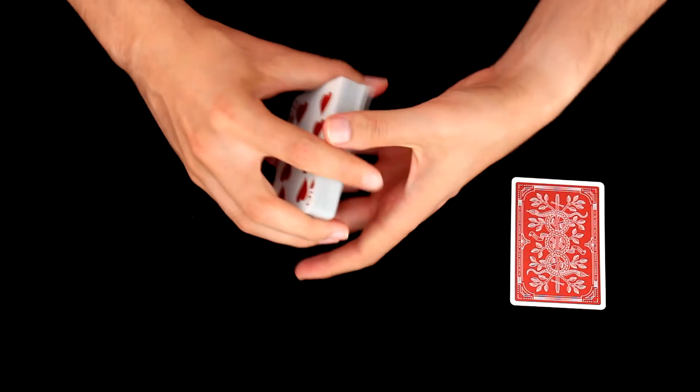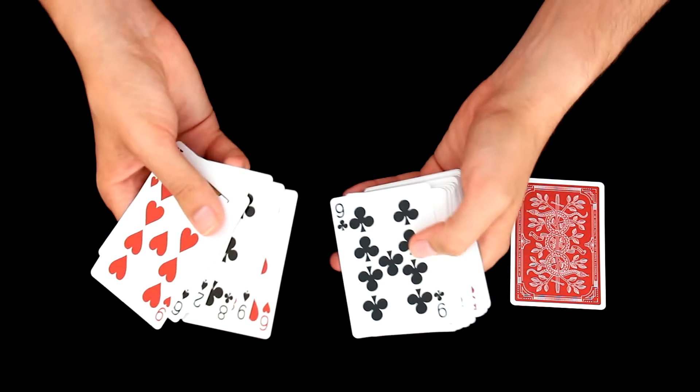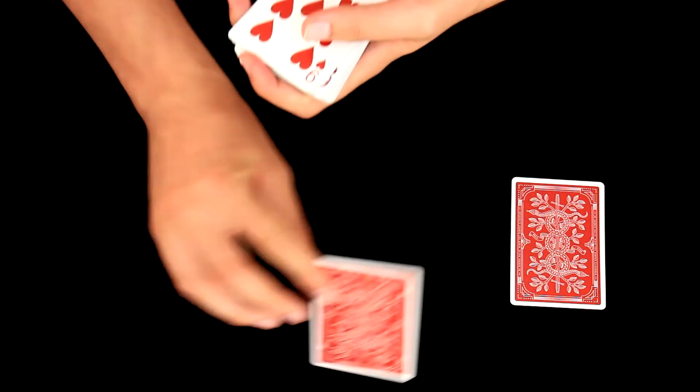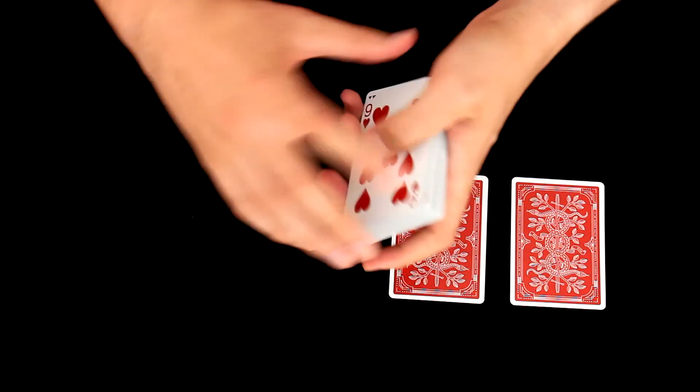Now the spectator will do the same, so he will take out any number card. Let's say number 9 in this case and also place it on a table. And now everything is done, you just need to follow these steps.